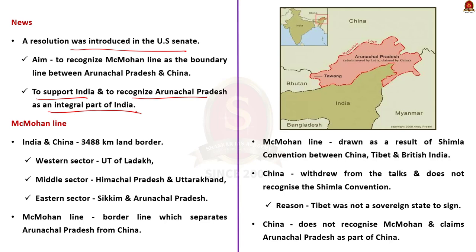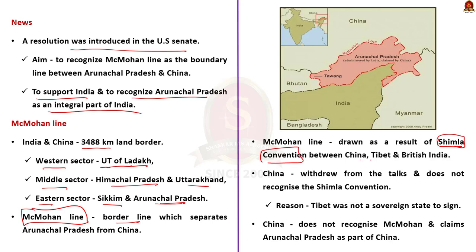India and China have a land border of nearly 3,488 kilometres, extending from the Union Territory of Ladakh in the west to Arunachal Pradesh in the east. The border covers the western sector (Ladakh), middle sector (Himachal Pradesh and Uttarakhand), and eastern sector (Sikkim and Arunachal Pradesh). The border line separating Arunachal Pradesh from China is called the McMahon Line. It was first drawn as a result of the Shimla Convention between China, Tibet and Great Britain in 1914. China withdrew from the talks, leaving Tibet and the British government to negotiate. China does not recognize this Shimla Convention, stating that Tibet was not a sovereign state to sign the agreement. This is why China claims Arunachal Pradesh as a part of Tibet, which in turn is part of China.